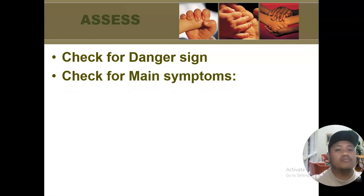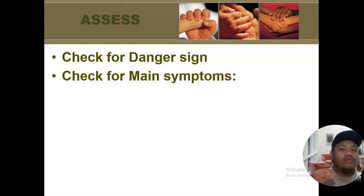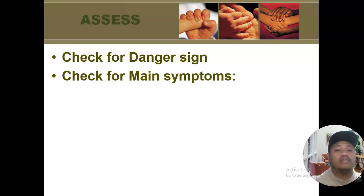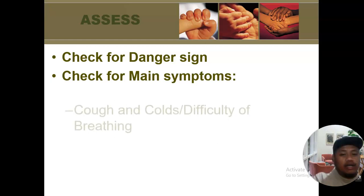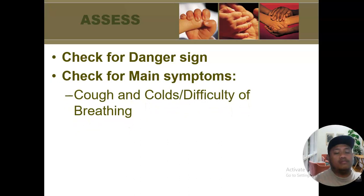For the main symptoms, we have cough and colds and difficulty of breathing, plus diarrhea, fever, and ear problems. In actual practice, we have to assess the danger signs, main symptoms, and specific symptoms under each main symptom before we classify a condition. After the main symptoms overview, we will focus specifically on cough and colds and difficulty of breathing.